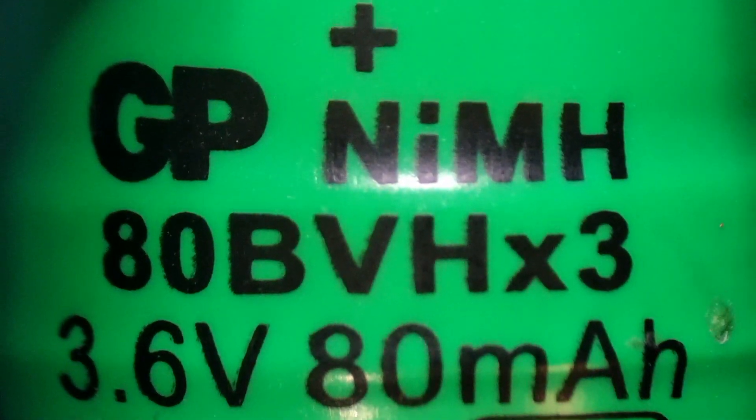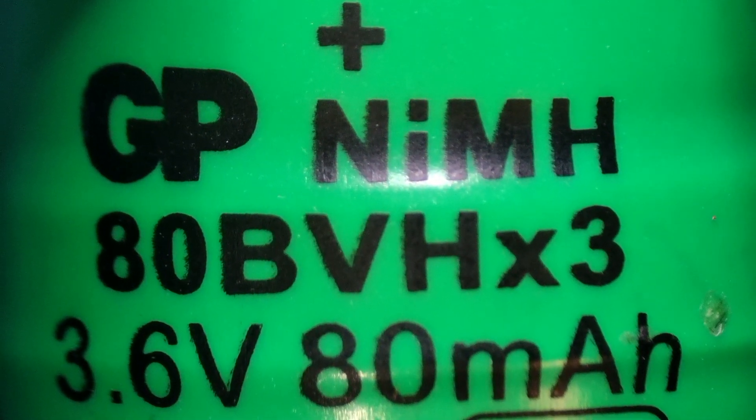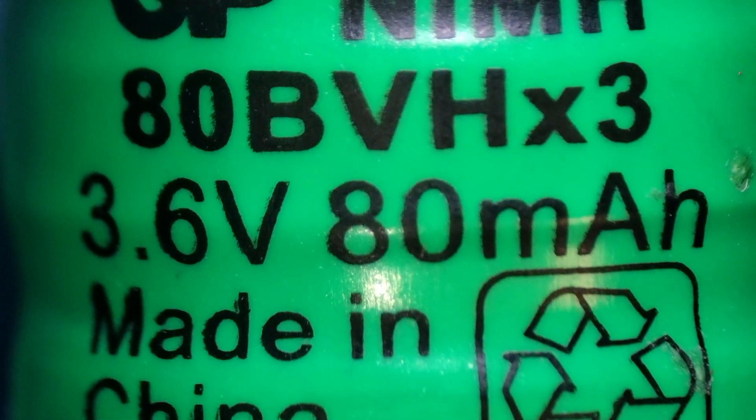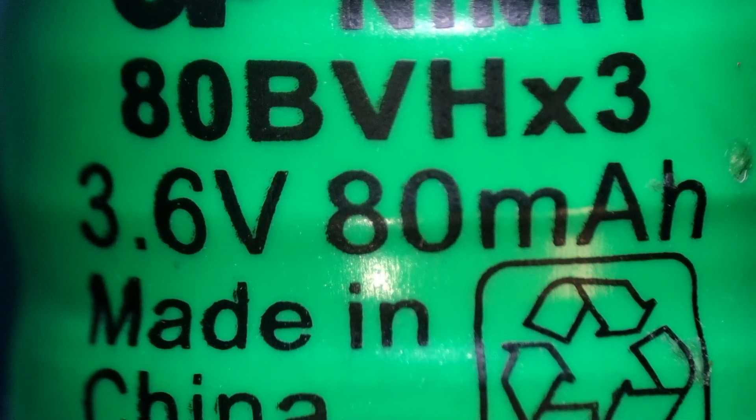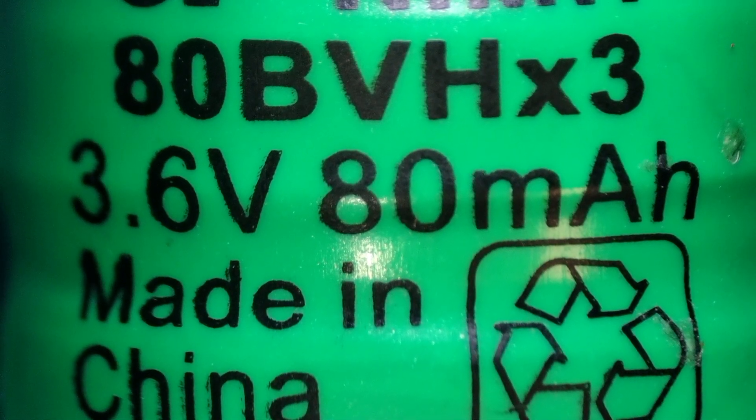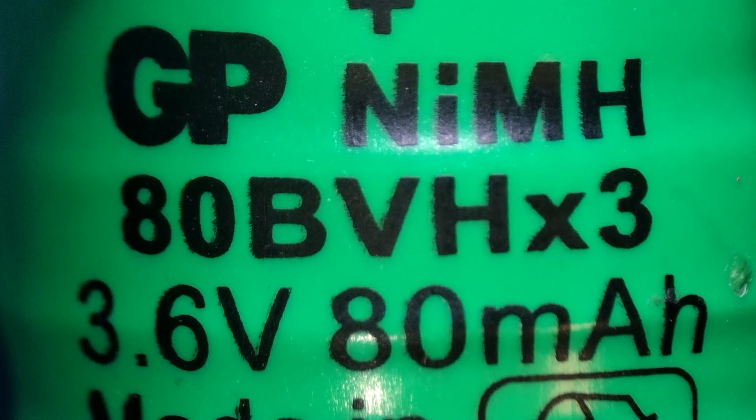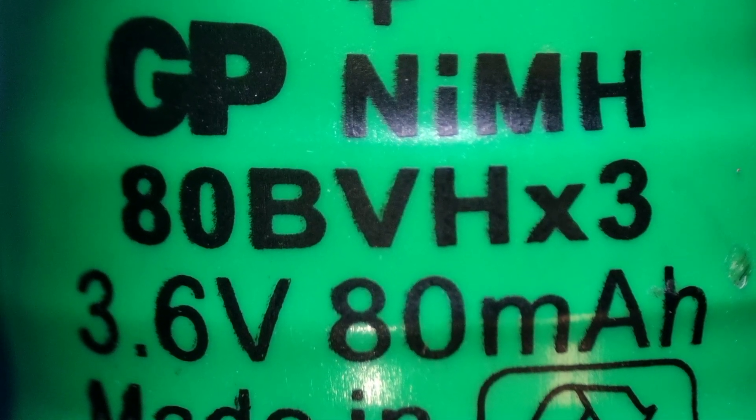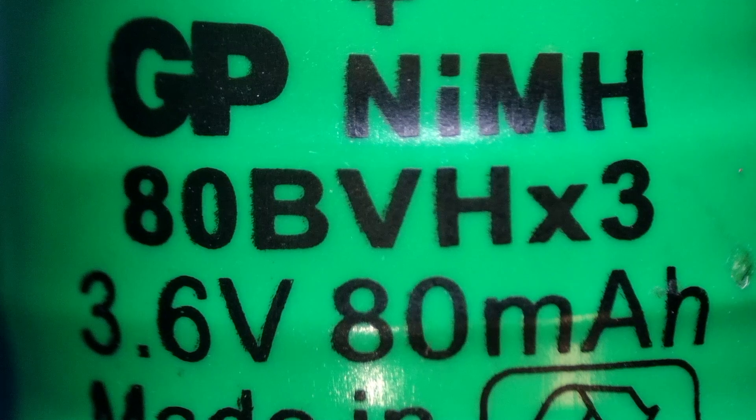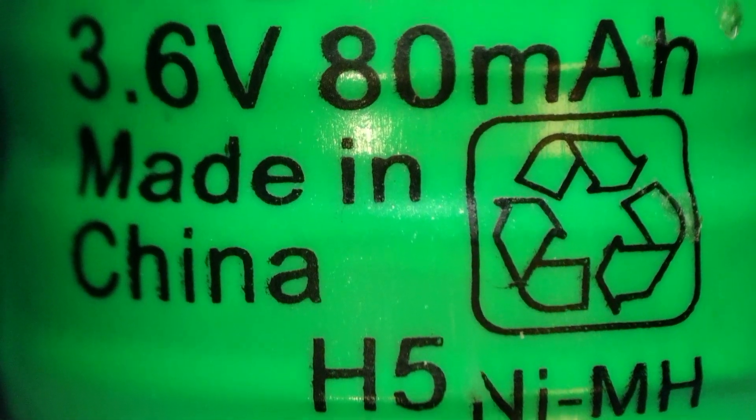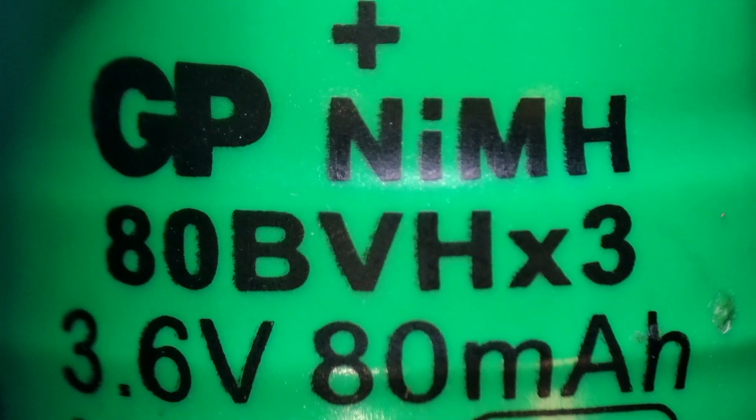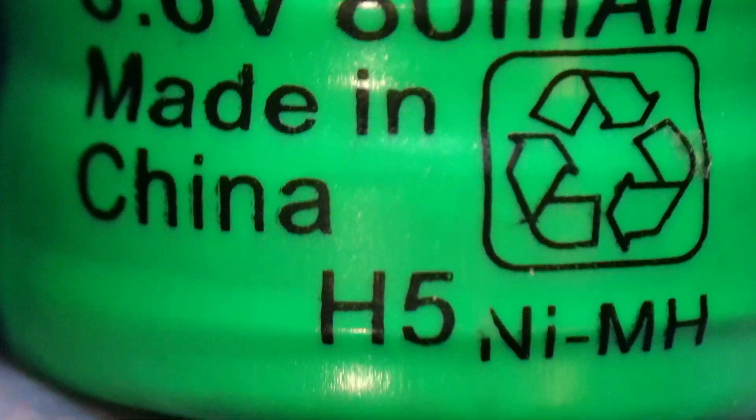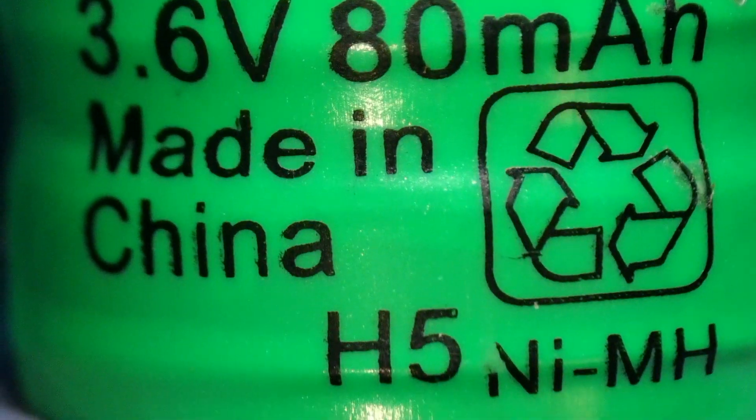Okay, so we've got the battery under the microscope, and you can see here it says NiMH, that's the type of battery. It says 80BVH times three, and then it says 3.6 volts, and it says 80mAh, which is the capacity of the battery in milliamp hours. So when you want to look for this battery, what you need to do is you need to get onto eBay or Google and type in 3.6 volts 80mAh NiMH battery, and you should be able to find it. What I'm going to do now is I'm going to switch over to the PC and I'm going to show you exactly how to do that. But before we do that, I just want to quickly test this battery and see if there is any voltage inside it or if it's completely dead.